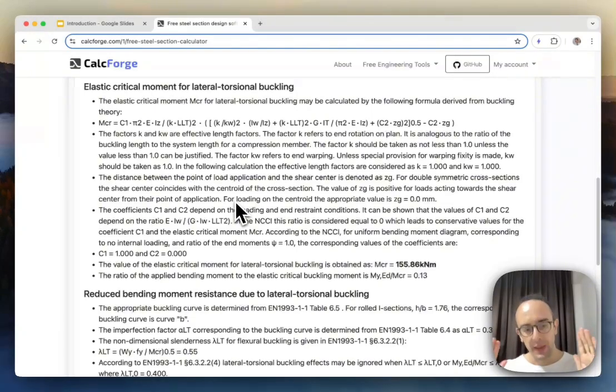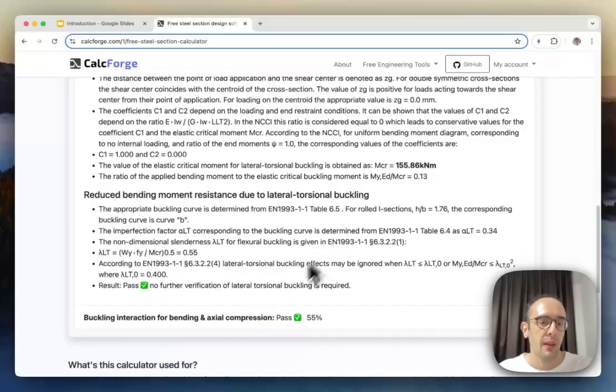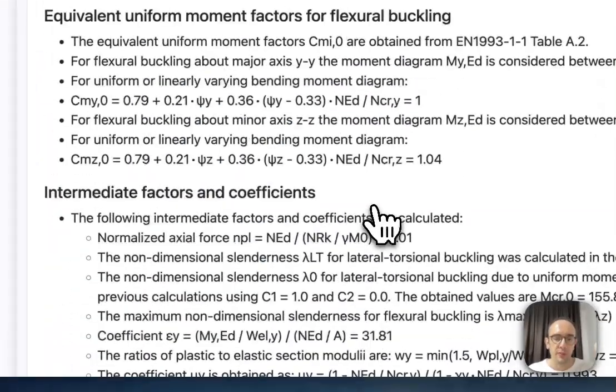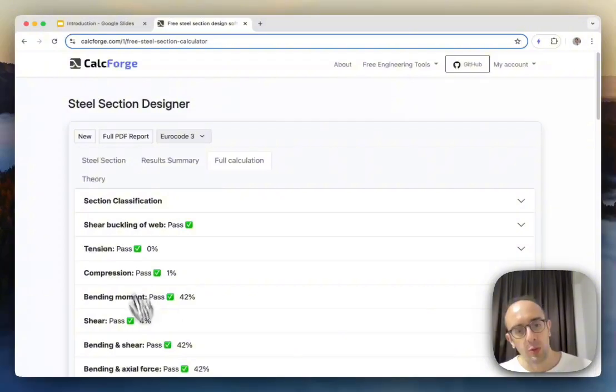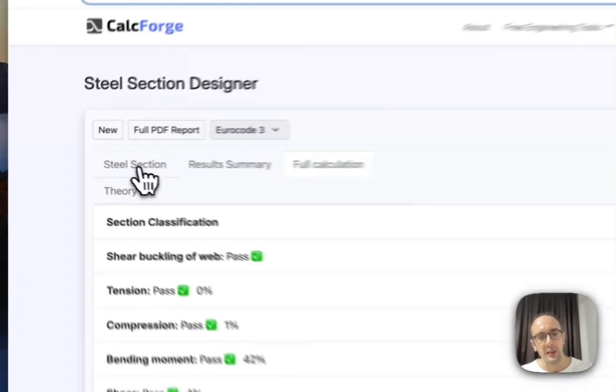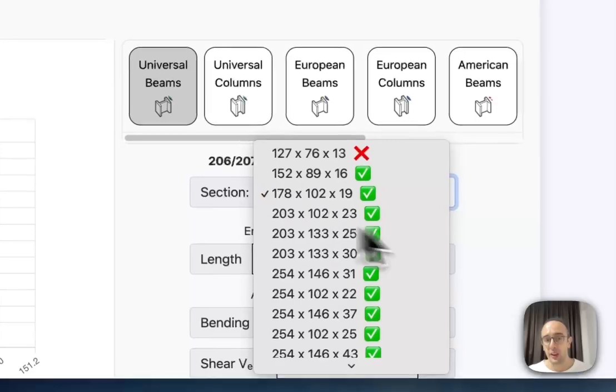So we go through shear and some of these combined checks and I want to show you also lateral torsion buckling. So lateral torsion buckling is where you have this effect of if you don't have restraints and you're compressing it it will buckle at a certain point. So these are the checks which are performed in order to understand if lateral torsion buckling is a problem on this beam. And so there's a full breakdown of all of the different checks which are done and it will talk you through this.